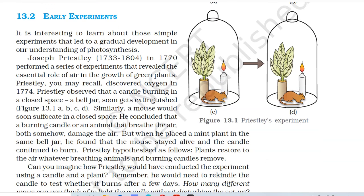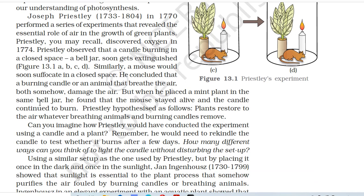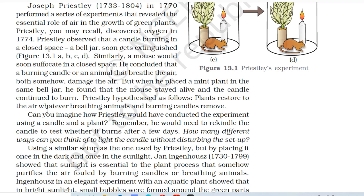13.2 Early Experiments. It is interesting to learn about those simple experiments that led to a gradual development in our understanding of photosynthesis. Joseph Priestley (1733–1804), in 1770, performed a series of experiments that revealed the essential role of air in the growth of green plants. Priestley discovered oxygen in 1774. He observed that a candle burning in a closed space — a bell jar — soon gets extinguished. Similarly, a mouse would soon suffocate in a closed space. He concluded that a burning candle or an animal that breathed somehow damaged the air. But when he placed a mint plant in the same bell jar, he found that the mouse stayed alive and the candle continued to burn. Priestley hypothesized: plants restore the air whatever breathing animals and burning candles remove.